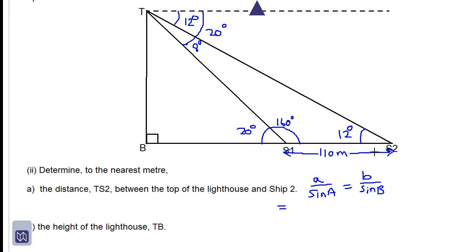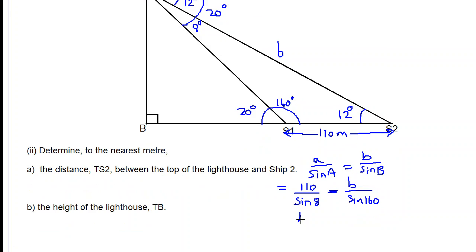So a will be 110 and sine capital A will be sine 8. That is equal to b which is just this distance here that we're trying to find. So b over sine of capital B which is sine 160. And what we do is we multiply both sides by sine 160. So we have b is equal to sine 160 multiplied by 110 all over sine 8.